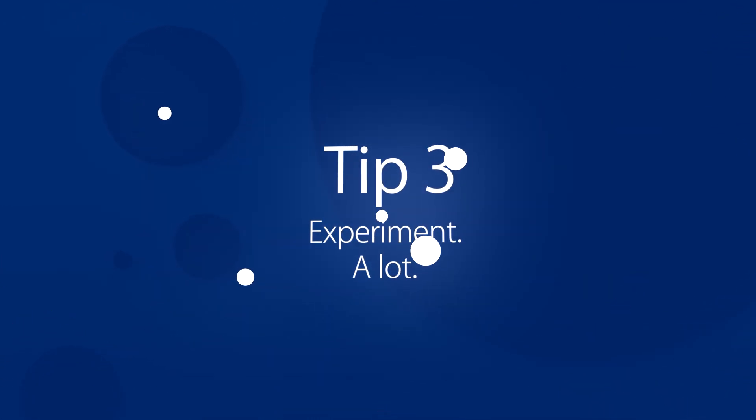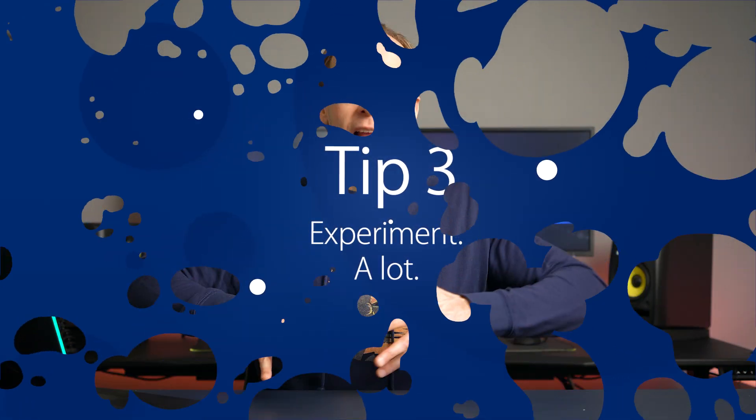Tip number three is to experiment a lot. Once you've followed a tutorial and you kind of understand what's going on, try to change things, try to do something different, try to break away from what you've just learned. If you're just memorizing the things you've seen, even if you understand why, it's kind of like reading a book on wild animals without ever stepping a foot outside the house — you may have theoretical knowledge but you don't necessarily know how to apply it where circumstances might not always be the exact same situation.